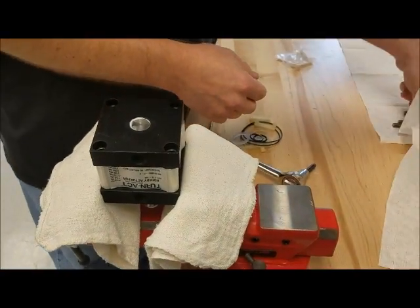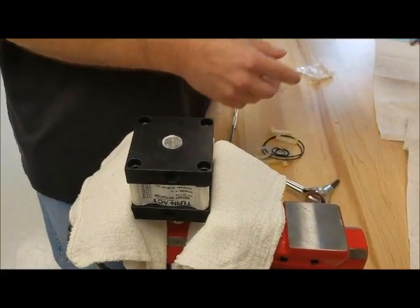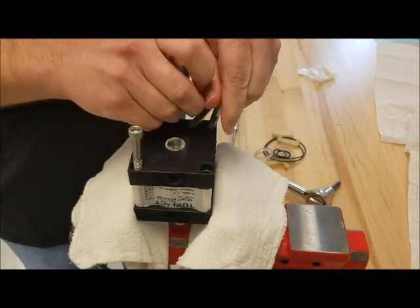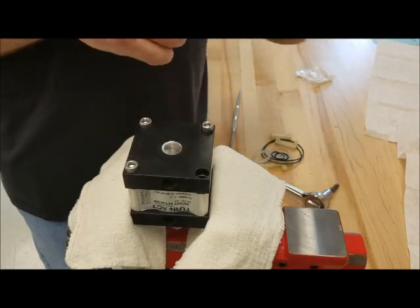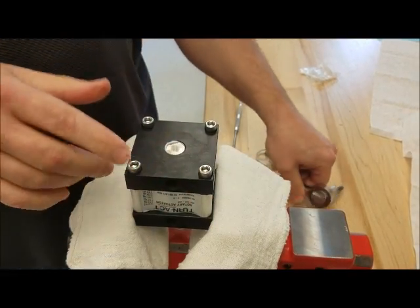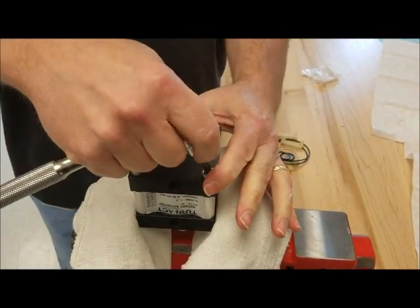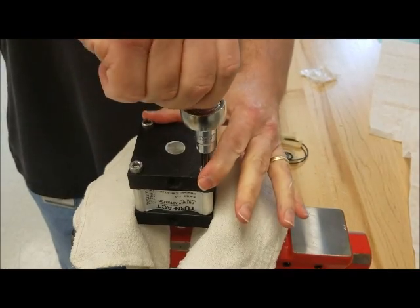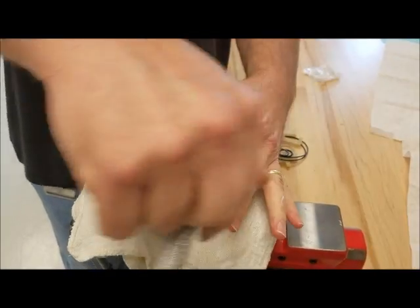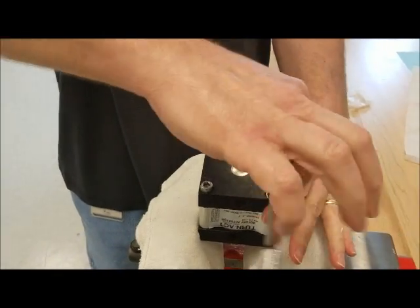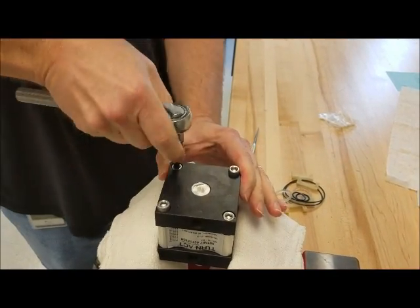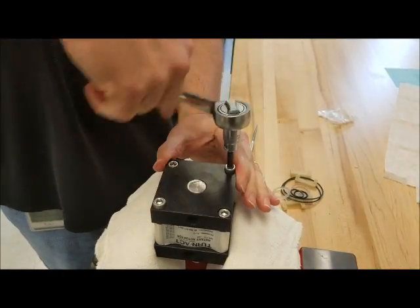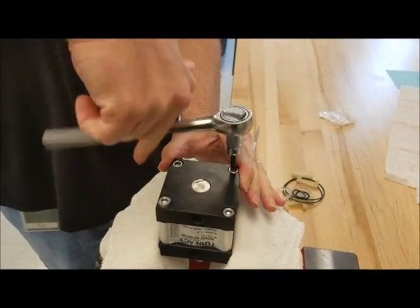Then you'll put your bolts back in. You'll tighten them down. Now it's important when you're tightening these back down that you tighten them in a pattern to where you're not taking everything down at one time. So you just want to get them down from corner to corner and work your way down slowly.